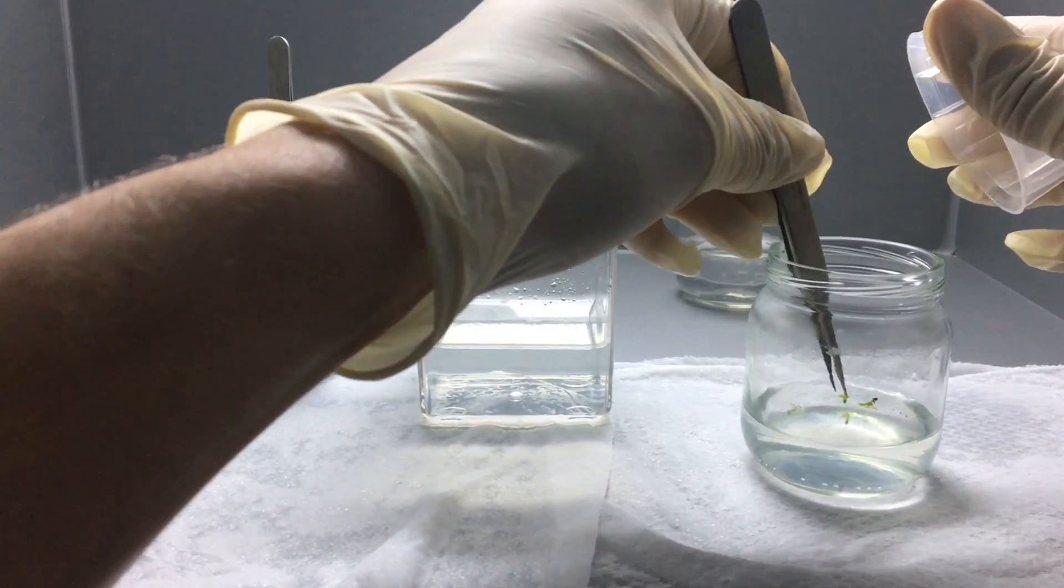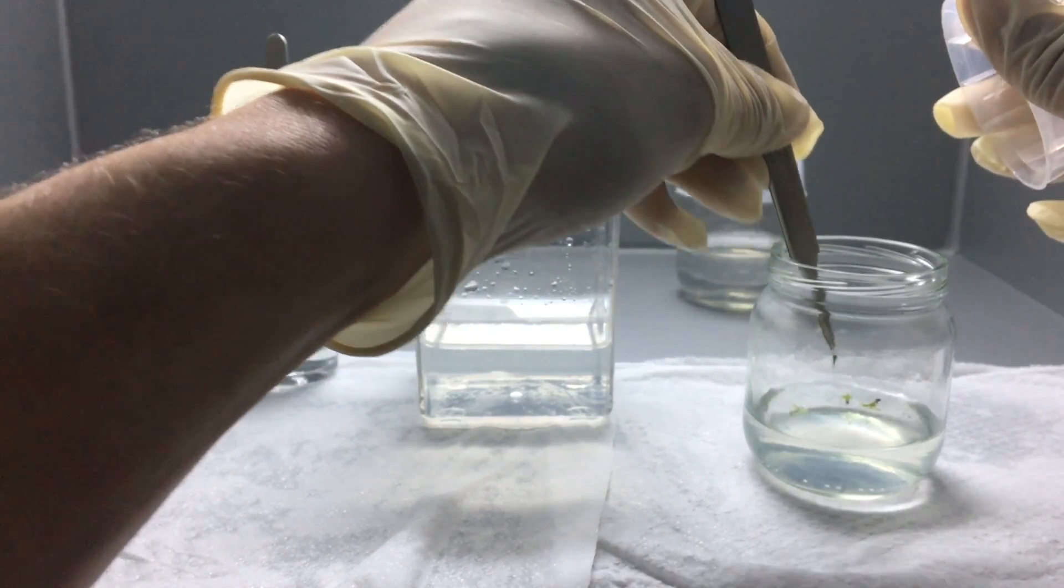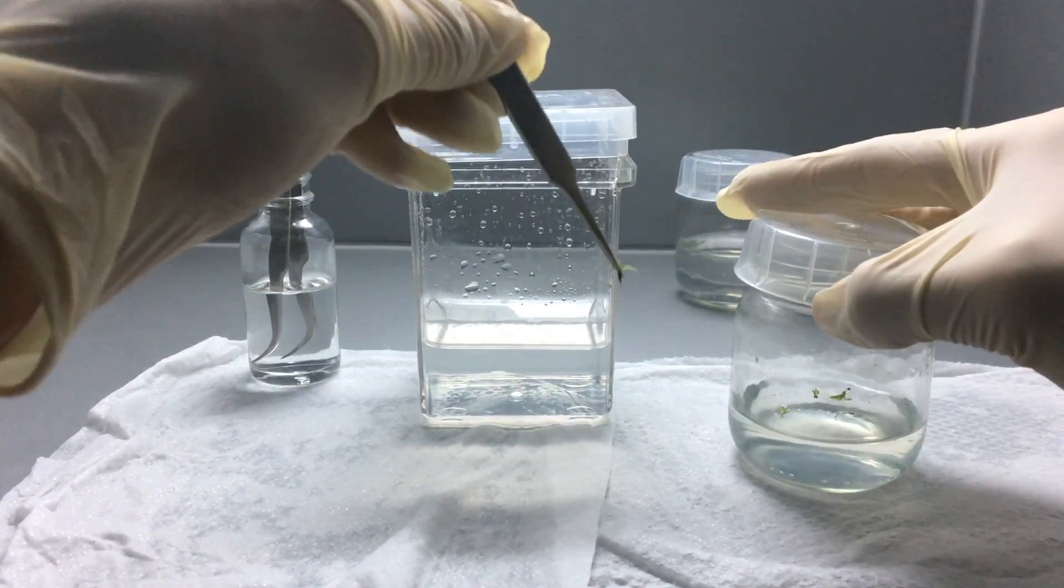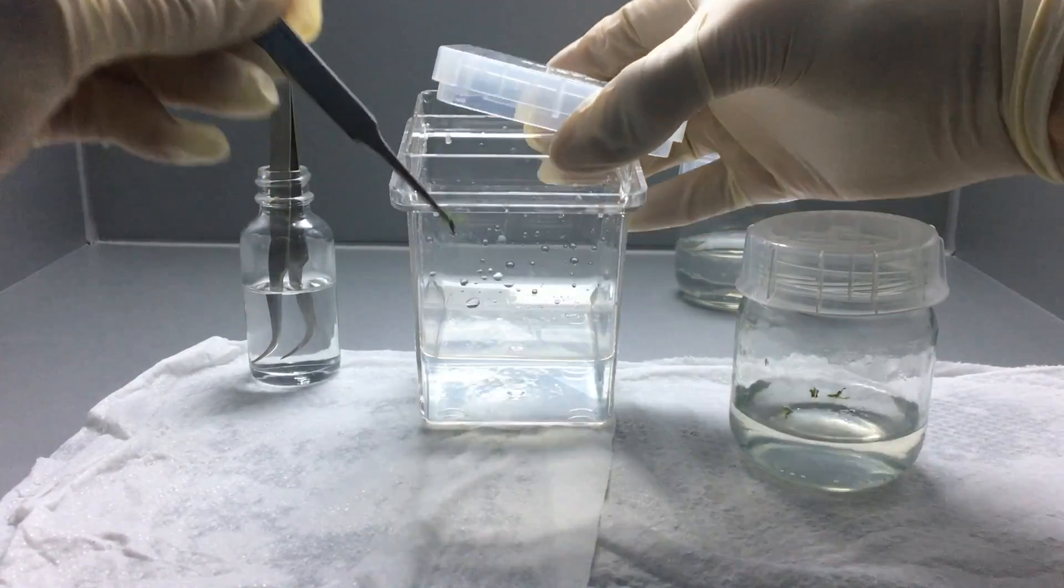So all I did there was flick off the remaining alcohol residue, and now I'm grabbing one of the seedlings. I'm going to cover up that culture again. Even though we're in the laminar flow hood, I like to keep things closed as much as possible.